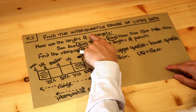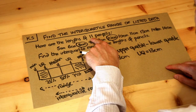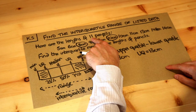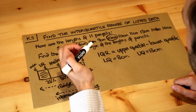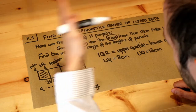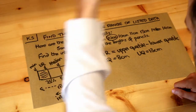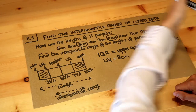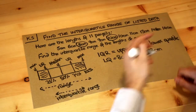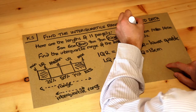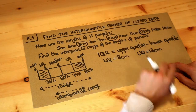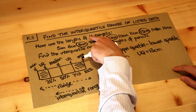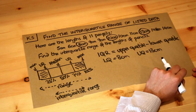Remember the trick: if the number of items is one less than a multiple of four — for example, you have 11 pencils — you add 1 to get 12, then find quarters of that. Quarter of 12 is 3, the next quarter is 6, the next is 9. So you take the 3rd, 6th, and 9th items, and those give you the lower quartile, median, and upper quartile. This only works when the number of items is one less than a multiple of four.